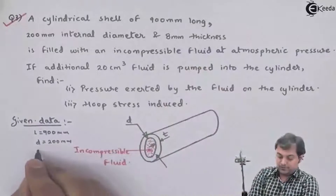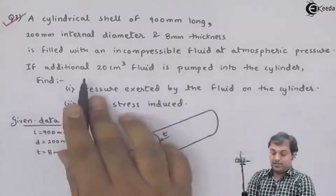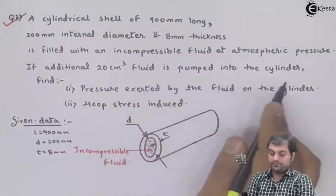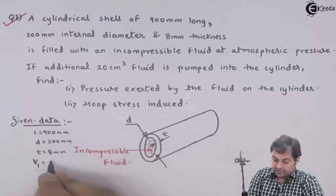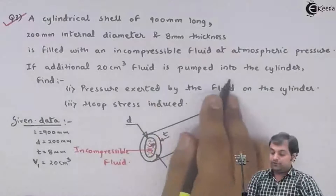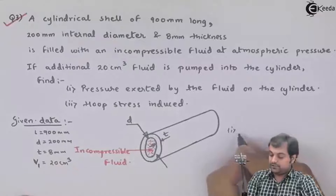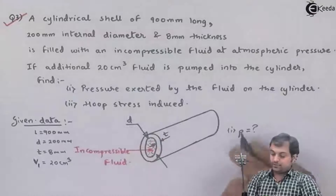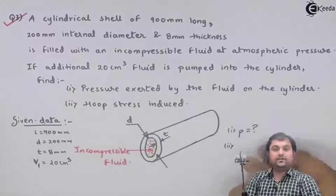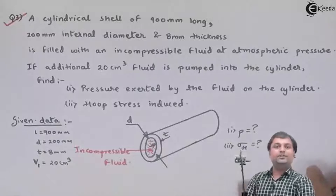And 8 mm thickness, small t. It is filled with an incompressible fluid at atmospheric pressure. If additional 20 centimeter cube fluid is pumped into the cylinder, that is the additional volume, I will write this as V1. Additional volume which is pumped is equal to 20 centimeter cube. Find pressure exerted by the fluid on the cylinder — first question is internal pressure developed — and second is hoop stress induced, sigma H.